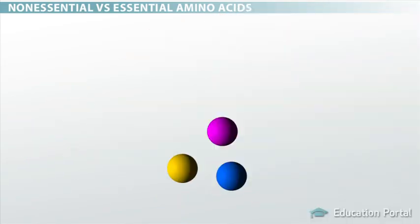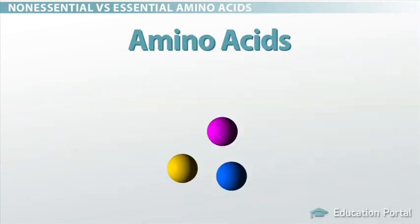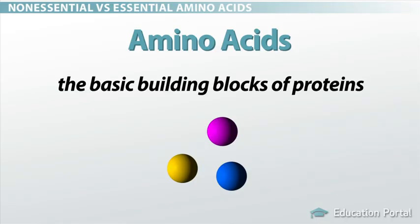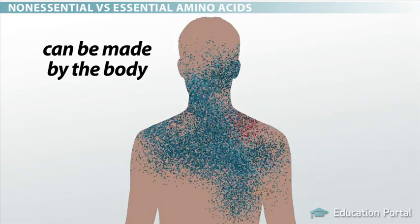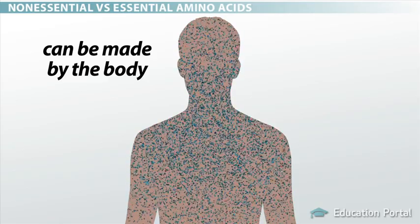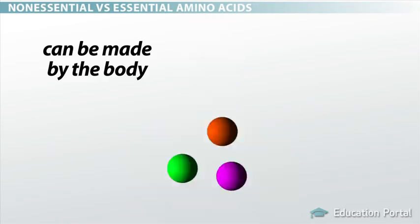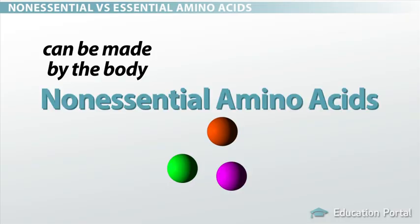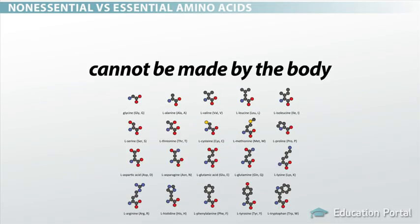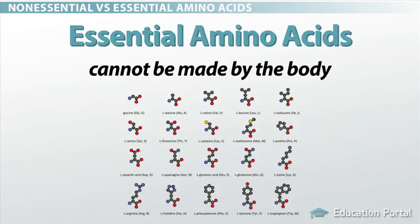The ingredients in your chocolate chip cookie recipe are much like the amino acids in your body, which are the basic building blocks of proteins. Some amino acids can be made by the body and are always available, much like the dry ingredients stored in your pantry are always on hand — they are called non-essential amino acids. Other amino acids cannot be made by the body, so you must get them from your diet, much like you must travel to the store to get your very important chocolate chips. These are called essential amino acids.